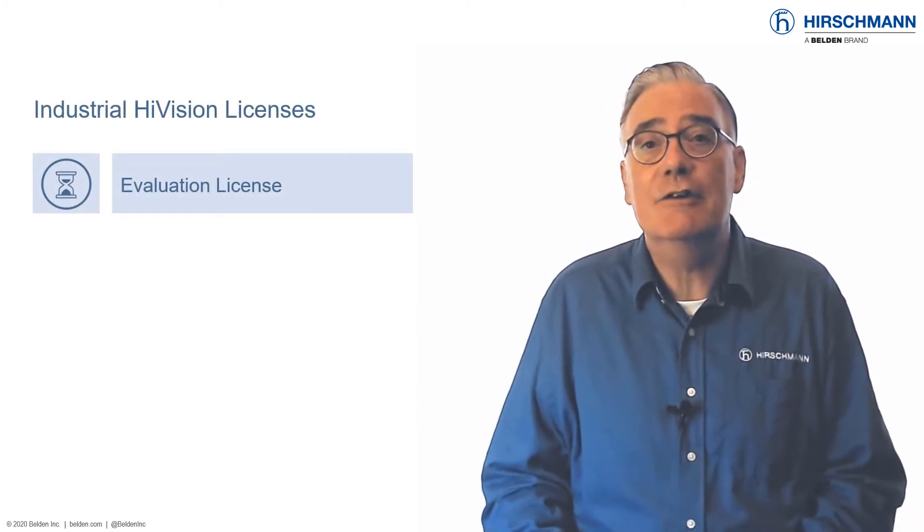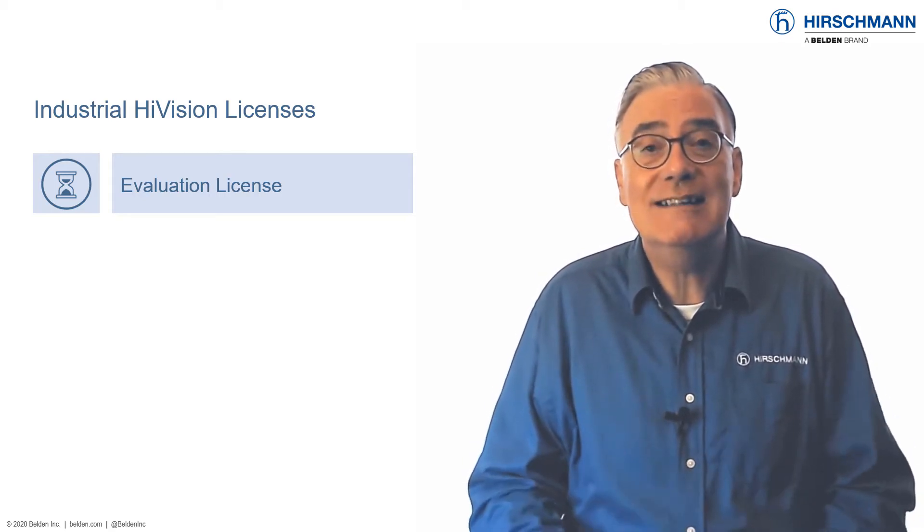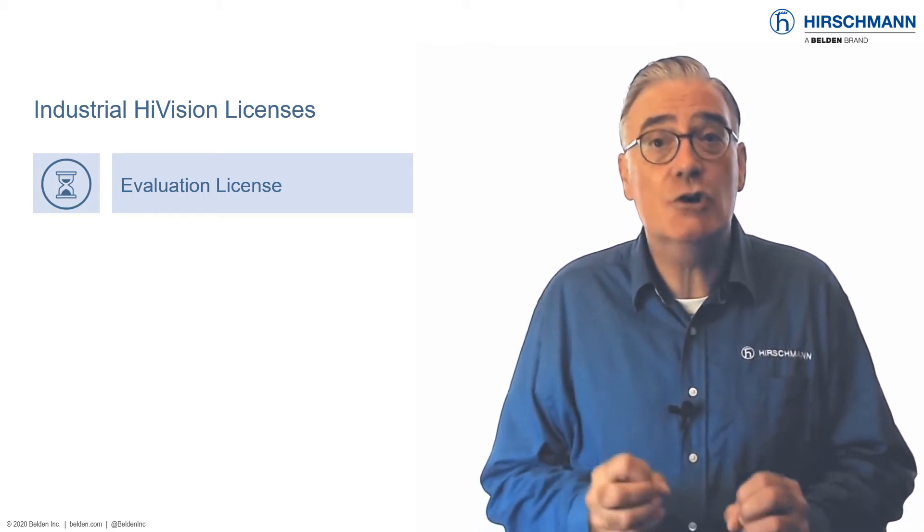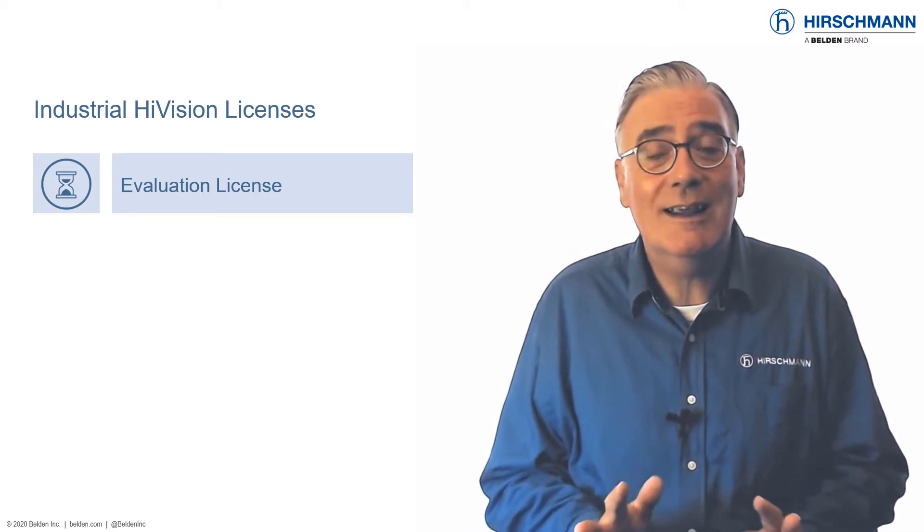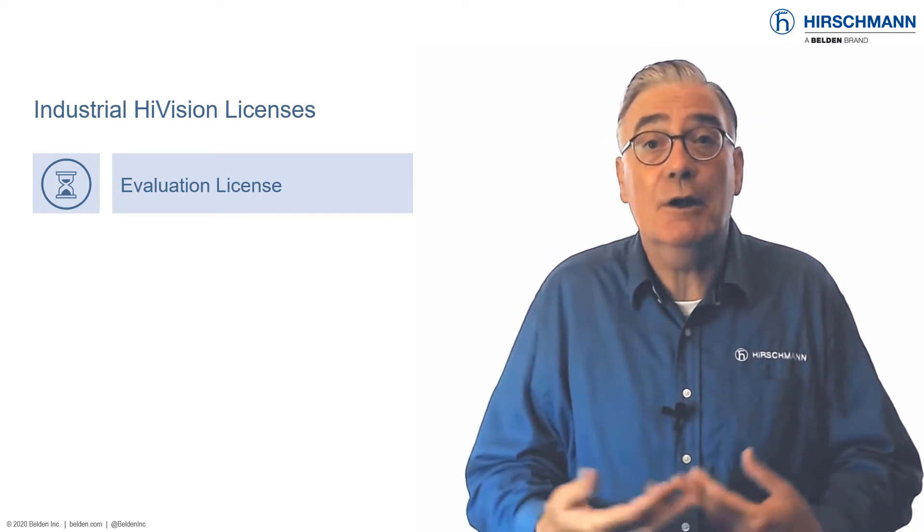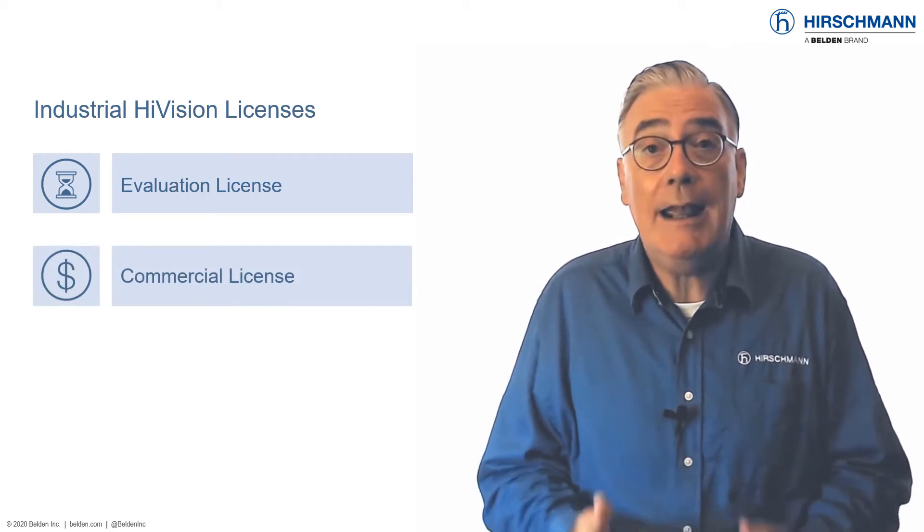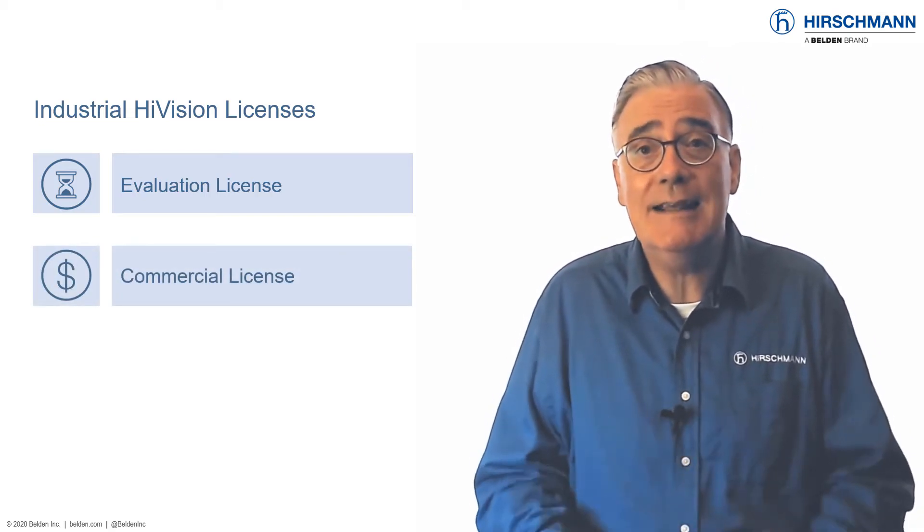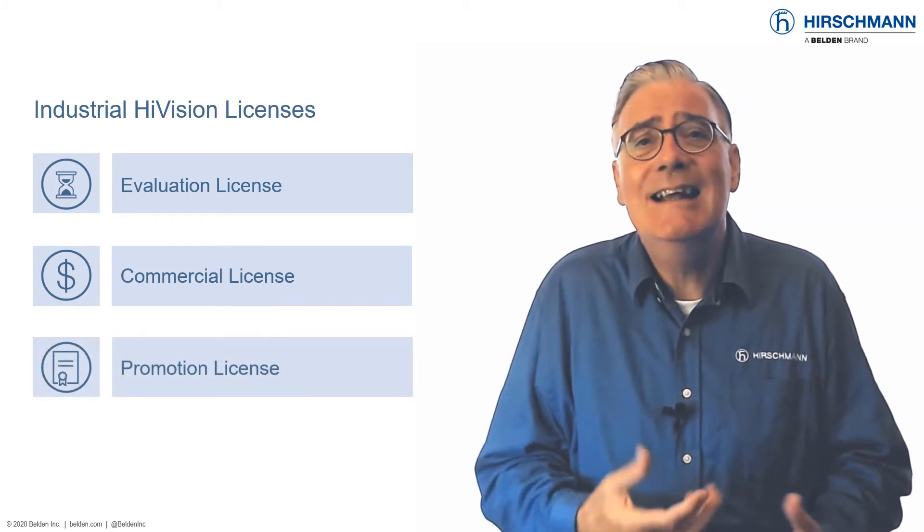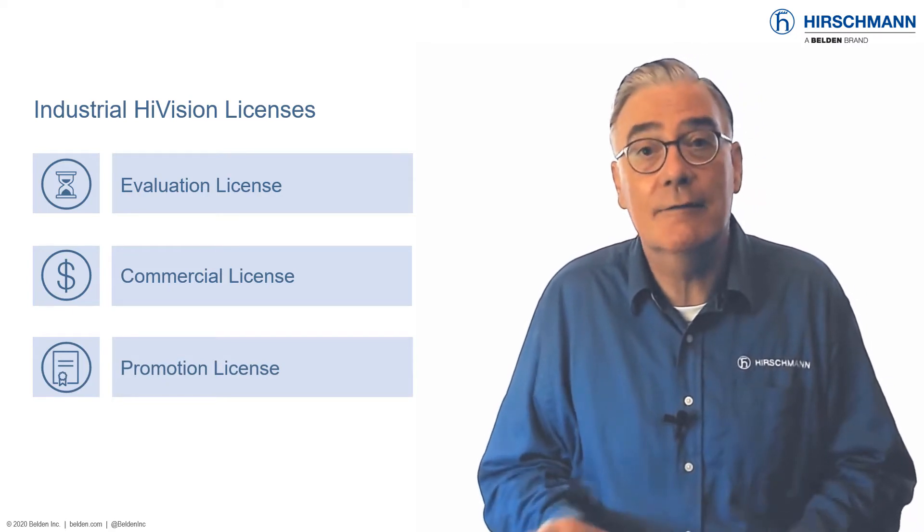When you download and install Industrial HiVision, it will run without a license for 30 days. After this evaluation period, the software will stop working. A license is then required to keep using Industrial HiVision. Normally you would need to buy a commercial paid license, but there is also a free of charge promotion license available.